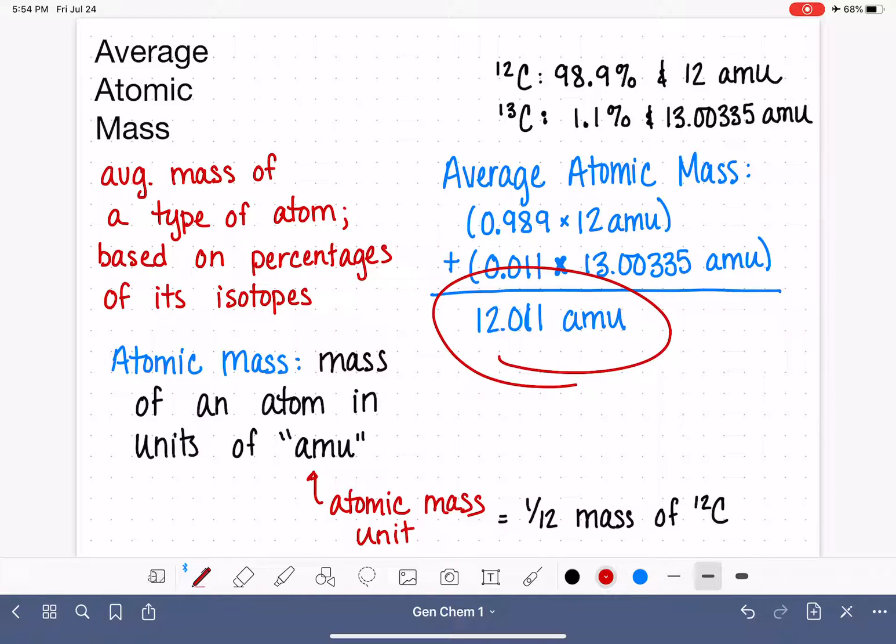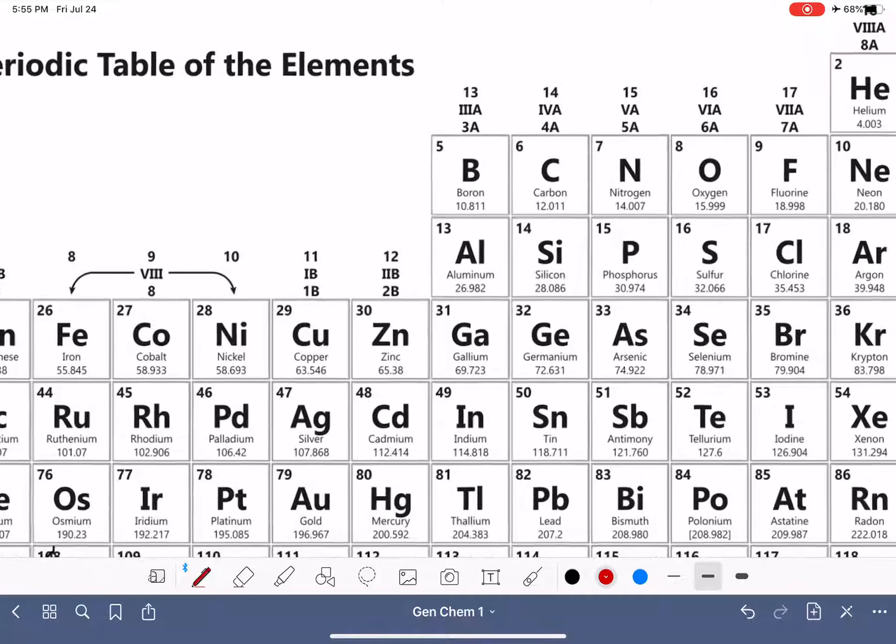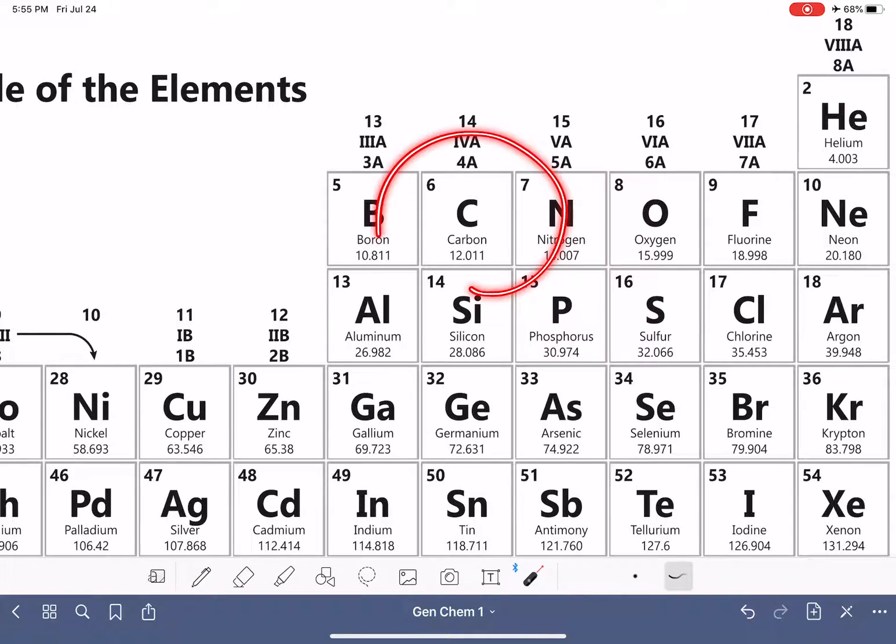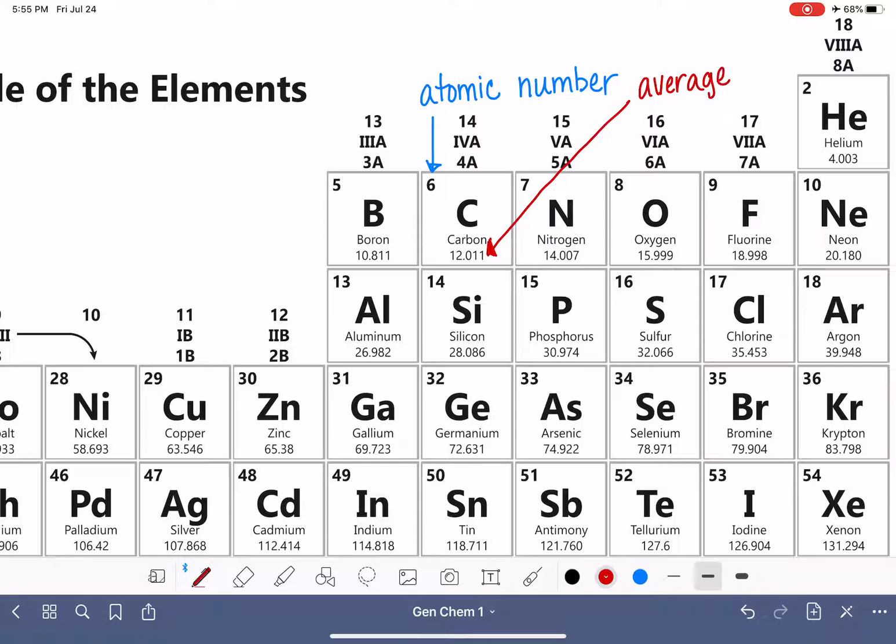So this is the average atomic mass of carbon. Now, this number is the other number that is shown on the periodic table. In my previous video, I talked about how the atomic number is shown on the periodic table. This is the other number that's shown on the periodic table. So let's go to carbon. For any atom on the periodic table, we typically have two pieces of information. The atomic number, which we've already talked about in the previous video. And now we know this number right here, the average atomic mass. That's the average mass of any given carbon atom in the universe.